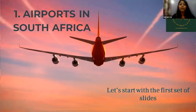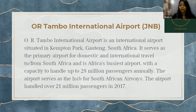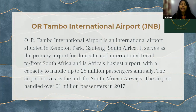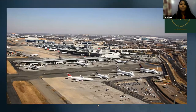Now we will see airports in South Africa. First one is OR Tambo International Airport, an international airport situated in Kempton Park, Gauteng, South Africa. It serves as the primary airport for domestic and international travel, and it's Africa's busiest airport, with a capacity to handle up to 28 million passengers annually. It serves as the hub for South African Airways and handled over 21 million passengers in 2017. Here you can see the picture of OR Tambo International Airport — it is actually looking very busy.